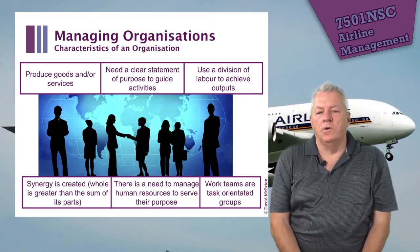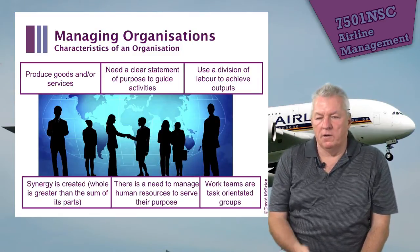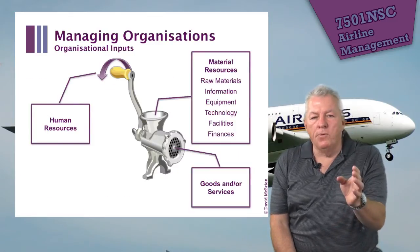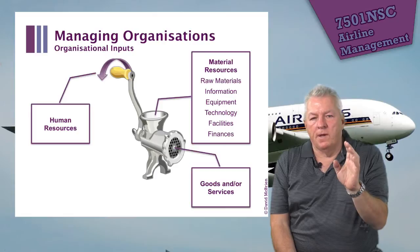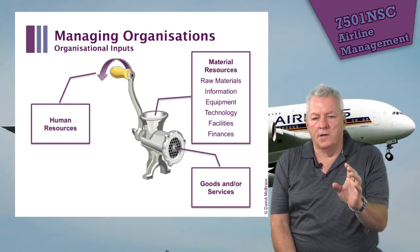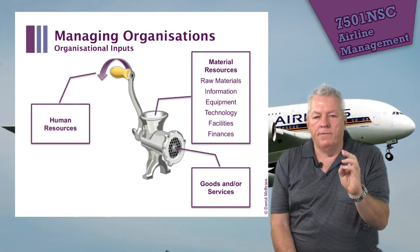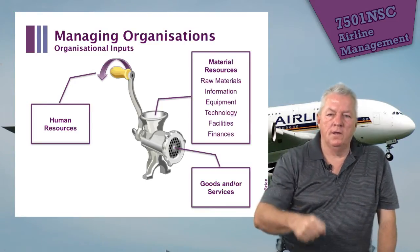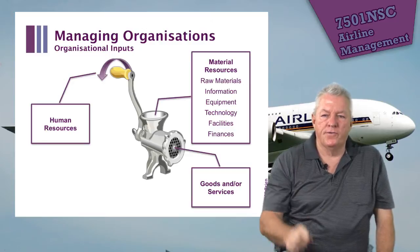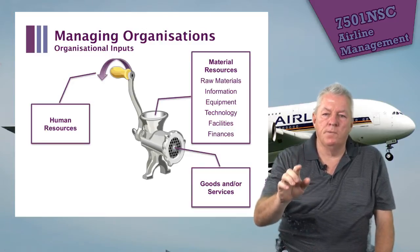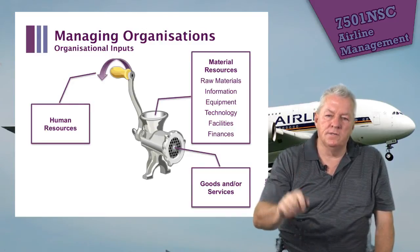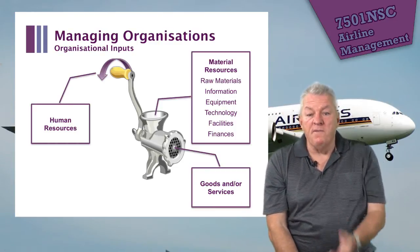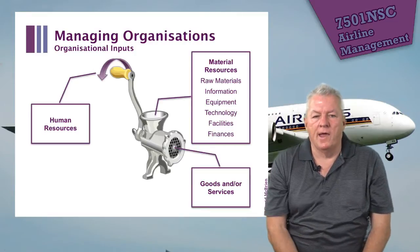We use work teams — task-oriented groups — to achieve activities. In very simple language, this is about organizational inputs: we have human resources, we put them into the grinder with material resources such as raw materials, information, equipment, technology, facilities and finances. We turn the handle and we produce goods and/or services.